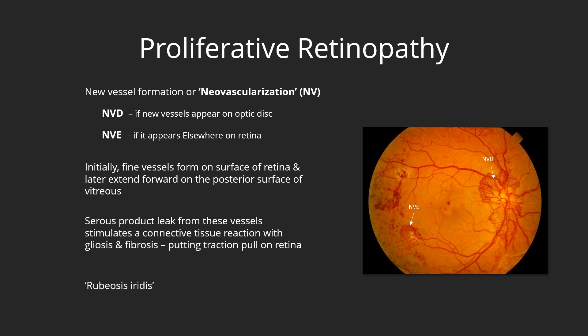Severe ocular ischemia may also stimulate new vessels to grow on the anterior surface of the iris, a condition called rubiosis irides. These vessels may obstruct the drainage angle of the eye, and thus the outflow of aqueous fluid, causing secondary glaucoma.